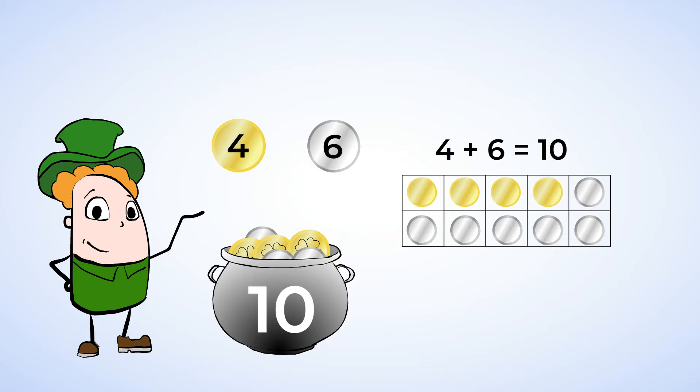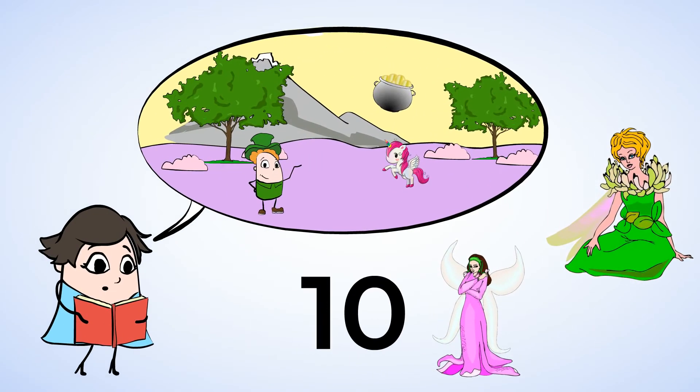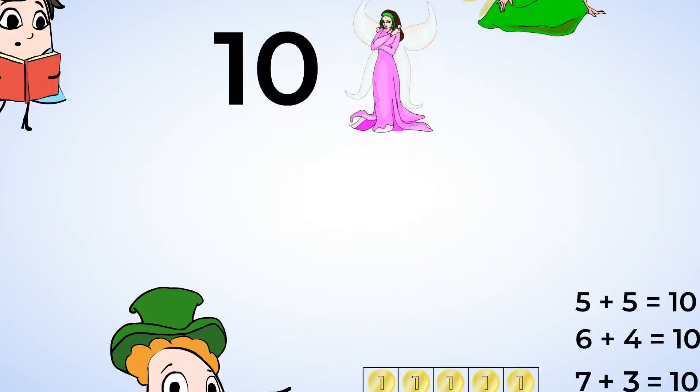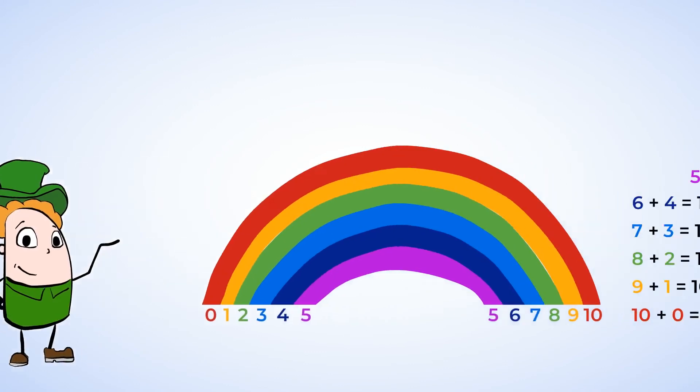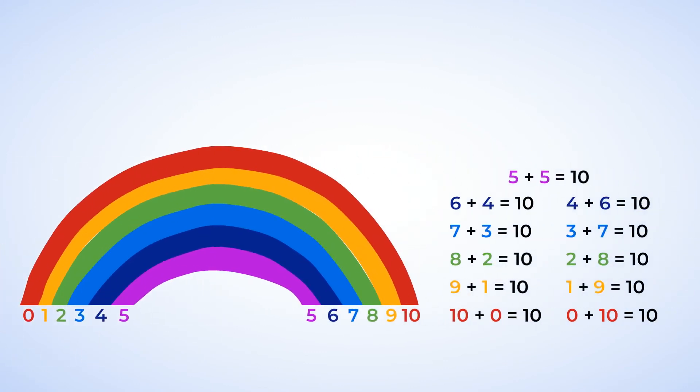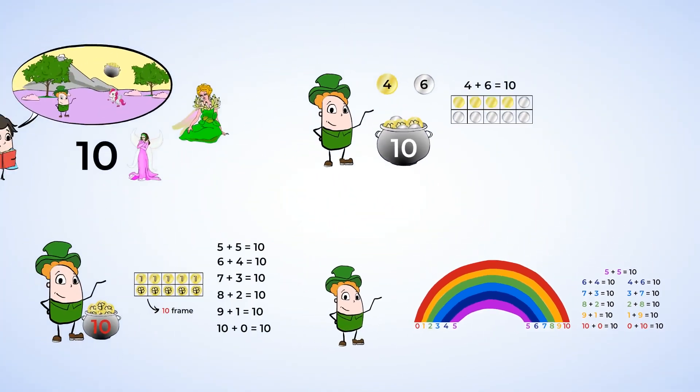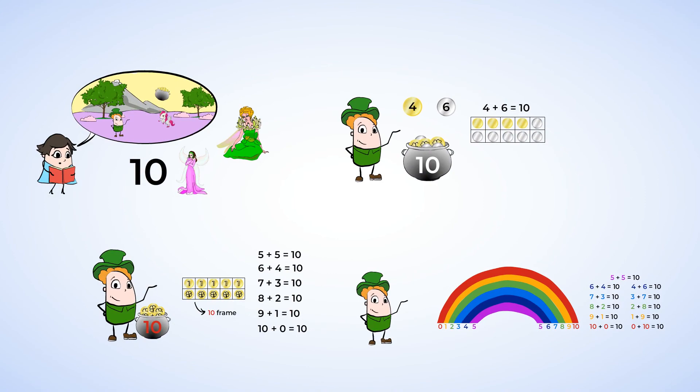Great work! You did a great job exploring how to make ten today. Together, we managed to find pairs of our magic ten friends, two numbers that make ten together. And we also used a ten frame, which is just like two five frames put together. And we created a mighty rainbow using the friends of ten, and this will help you remember which numbers make ten. You keep on using that mighty magical mind, and we will see you soon.